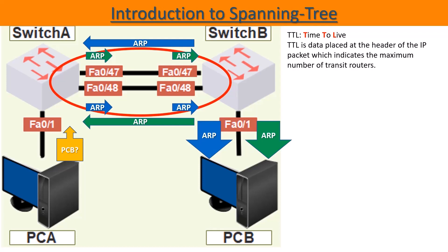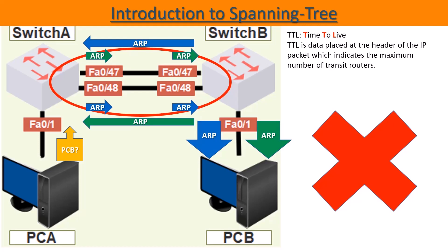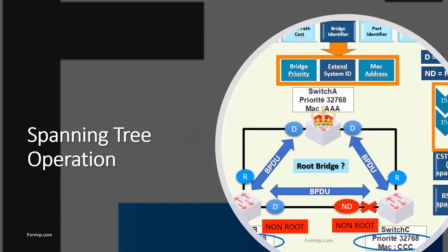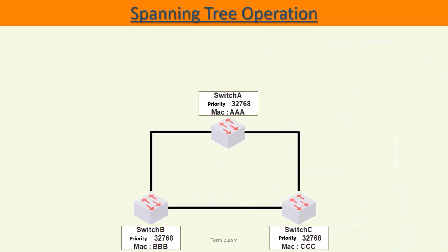This is where the spanning tree protocol comes in. Thanks to it, we can obtain a topology without loops by blocking certain ports. Now we will see how spanning tree works. In this example, we have three switches represented with MAC addresses which form a loop.